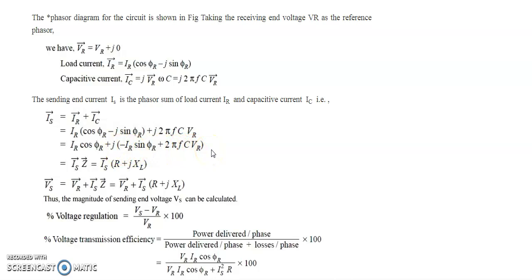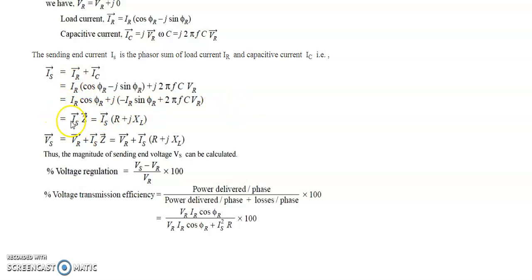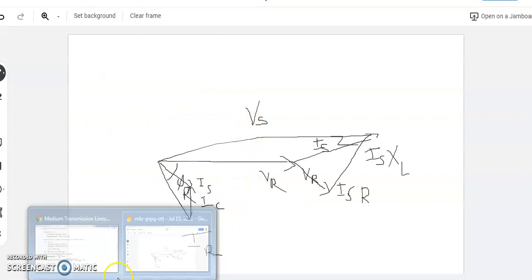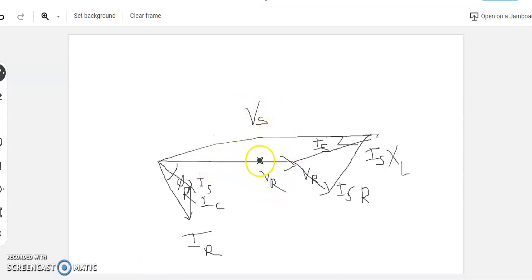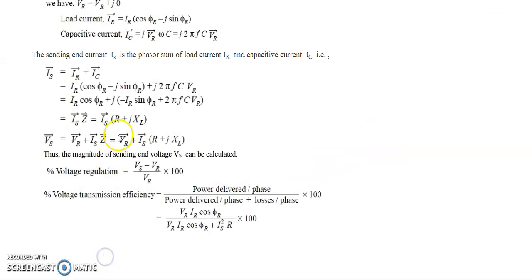Is·Z can be written where Z equals R + jXL. The sending end voltage Vs equals Vr + Is·Z, which can be elaborated as Vr + Is·(R + jXL). The magnitude of sending end voltage Vs can then be calculated. The percentage voltage regulation is (Vs − Vr) / Vr × 100.